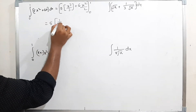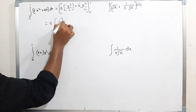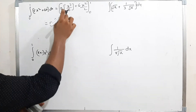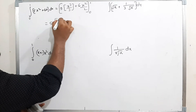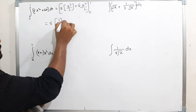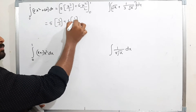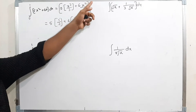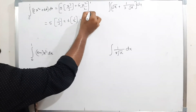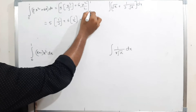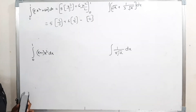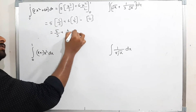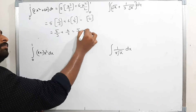Substituting the upper limit: 5 into 1³/3 plus 6 into 1²/2. Since 1³ = 1 and 1² = 1, this gives 5/3 plus 6/2. Substituting the lower limit 0 gives 0. So the answer is 5/3 + 3.